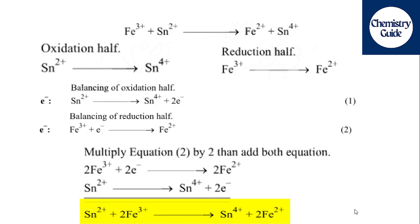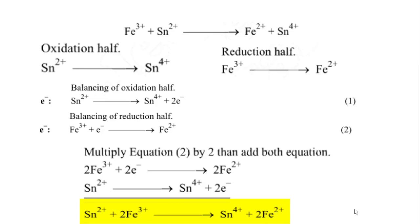The final balanced redox equation is: Sn²⁺ plus 2Fe³⁺ → Sn⁴⁺ plus 2Fe²⁺. This is the balanced redox equation that we were trying to obtain.